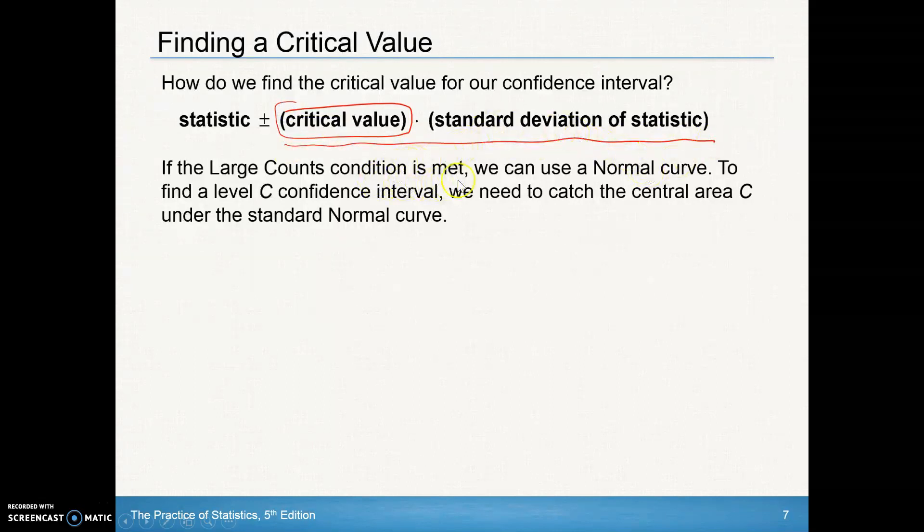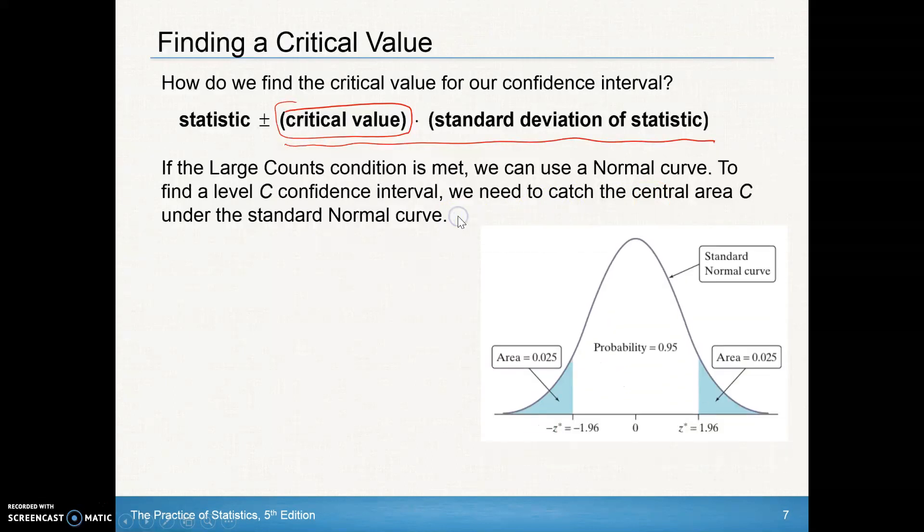So how do we find the critical value? This whole part here is margin of error when we put that all together. But how do we find that critical value? Well, if a large counts condition is met, if we've established normality, to find a C count, we need to catch the central area C under the standard normal curve.